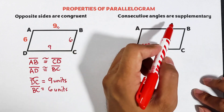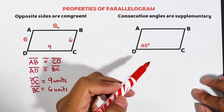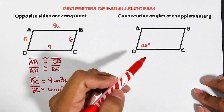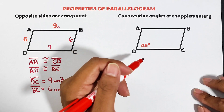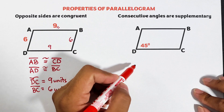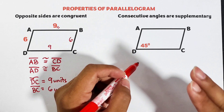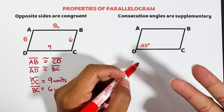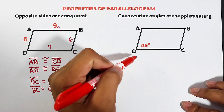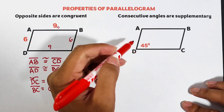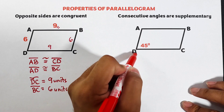The second property is that consecutive angles are supplementary. What do we mean by supplementary? These are two angles where, when we add them, their sum is equal to 180 degrees. Here we have two sets of supplementary angles. With regards to angle D, there are two angles that are consecutive with it.